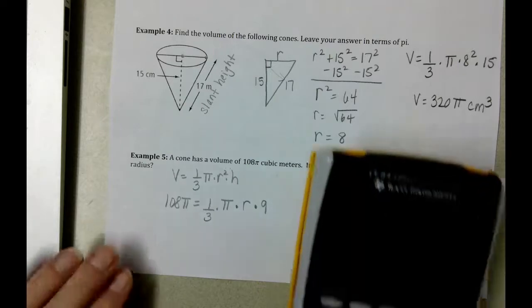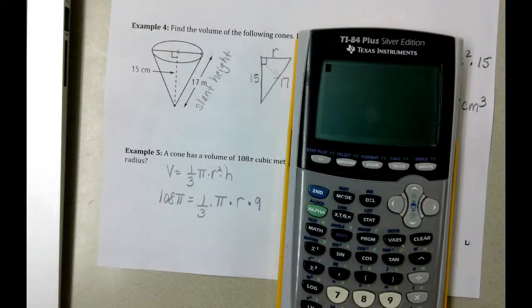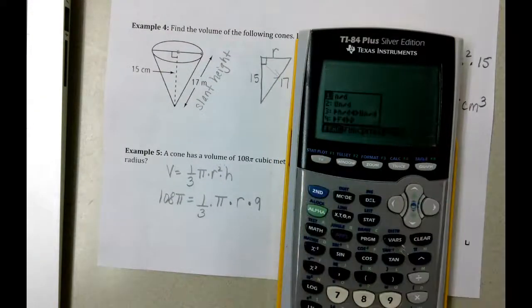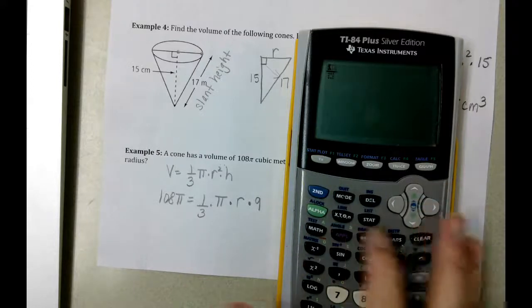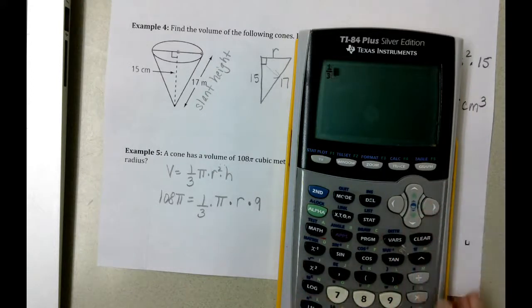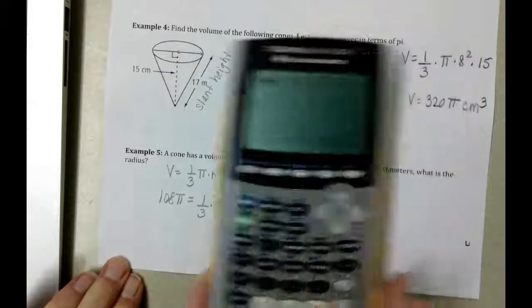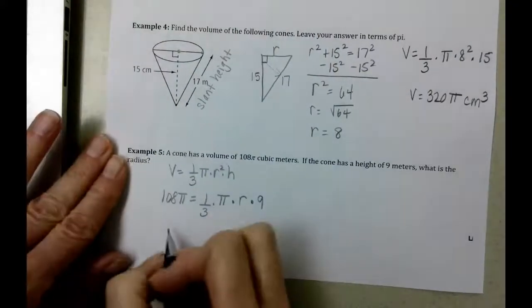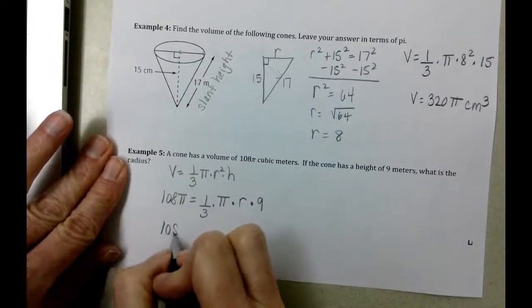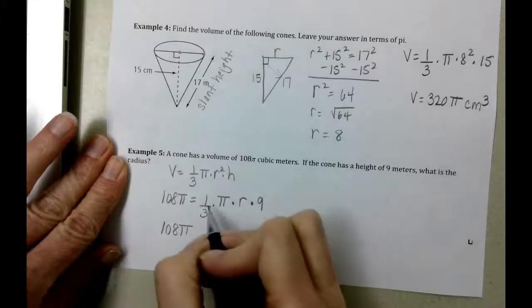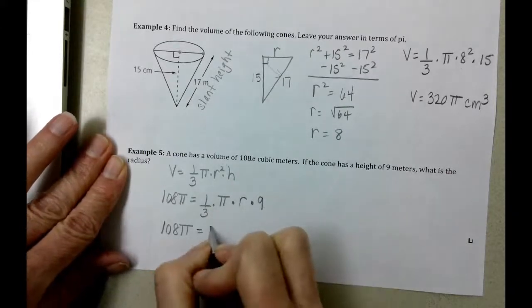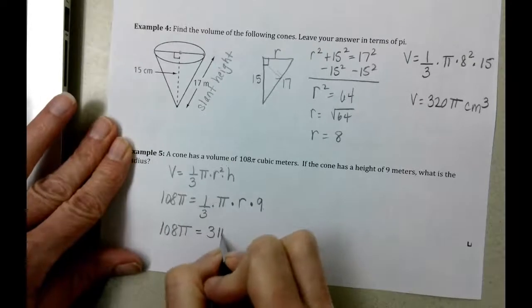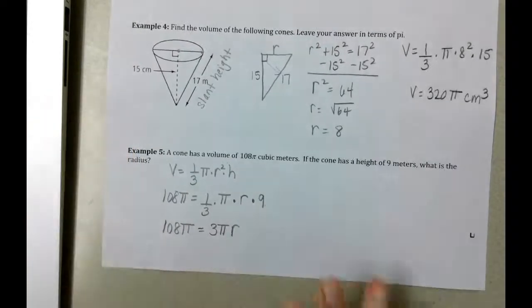There's a couple ways to do this problem, but I'm going to start with, let's see what 1/3 times 9 equals. You can't see it very well because it's too dark, but it equals 3. So what we have then is 108 pi. When we multiplied 1/3 and 9, we ended up with 3, and we still have the pi and we have the r squared.